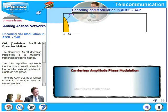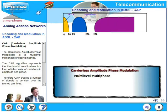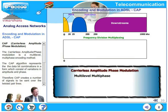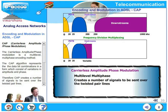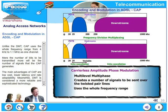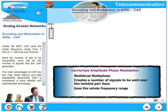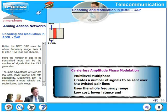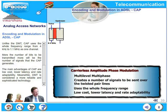CAP is a multi-level, multi-phase encoding method. The CAP algorithm represents data bit combinations in a form consisting of variations in amplitude and phase. Therefore, CAP creates a number of signals to be sent over the twisted pair lines. Unlike DMT, CAP uses a whole frequency range from 4 kilohertz to 1.1 megahertz as a single channel. The more bits to be transmitted, the more signals CAP generates. The main advantages of CAP are low cost, lower latency, and rate adaptability. Meanwhile, DMT is considered a more reliable and more sophisticated technology.